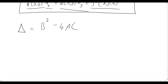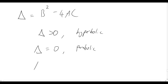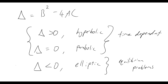There are three cases: if the discriminant b² − 4ac is greater than zero, the PDE is hyperbolic; if equal to zero, it is parabolic; and if less than zero, it is elliptic. Hyperbolic and parabolic PDEs are generally time-dependent, meaning one variable is t for time. Elliptic PDEs describe equilibrium problems. Elliptic problems are typically boundary value problems, while parabolic and hyperbolic are initial value or initial boundary value problems.